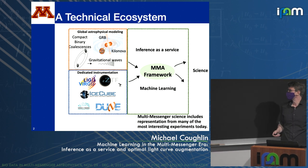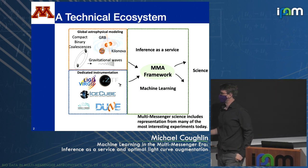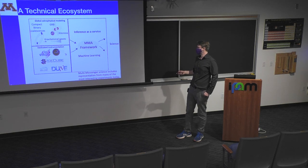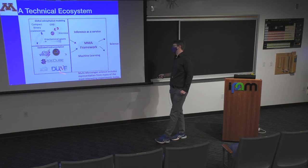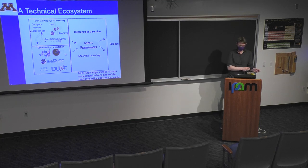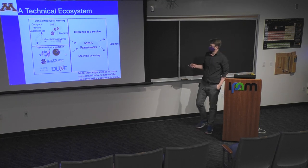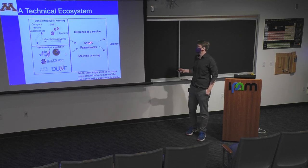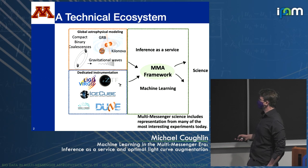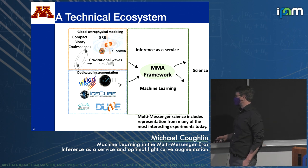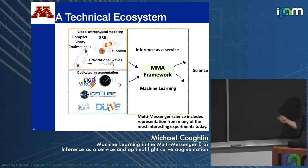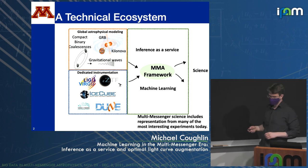Closely tied to that is the dedicated instrumentation we use to search for gravitational waves — LIGO-Virgo-KAGRA, but also IceCube doing neutrino searches, Rubin and ZTF doing optical time domain surveys. When you bring theorists and experimentalists together into an overall framework, that's really where the science comes out. This multi-messenger science includes representation from many of the most interesting experiments and theoretical models today.